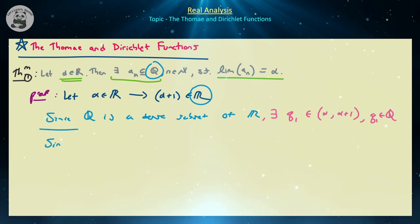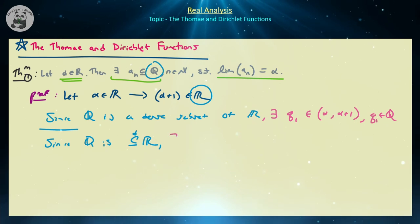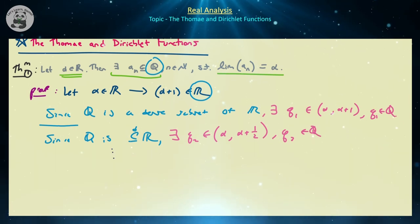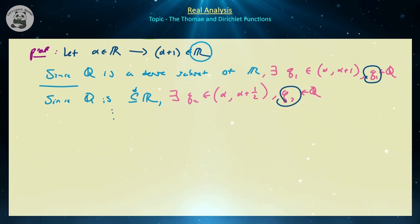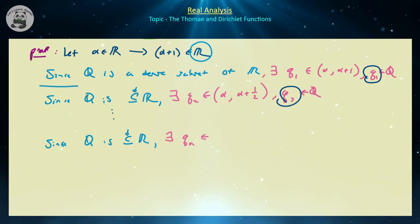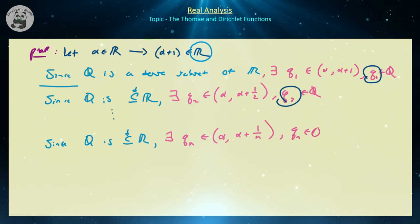Again, since Q is a dense subset of R, there exists some rational number q2 in the interval (alpha, alpha + 1/2). We continue this sequence inductively: since Q is dense in R, there exists some qn in the interval (alpha, alpha + 1/n), where qn is rational and n is a natural number. So we're building a sequence q1, q2, q3, q4, and so on.